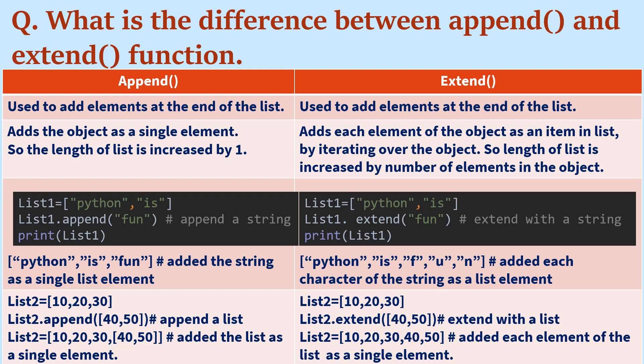Another example: list2 = [10, 20, 30]. If you append [40, 50], that list is added as a single element: [10, 20, 30, [40, 50]]. But if you use extend([40, 50]), the values 40 and 50 are treated as individual elements and added separately, giving [10, 20, 30, 40, 50]. This is how append() and extend() differ from each other.